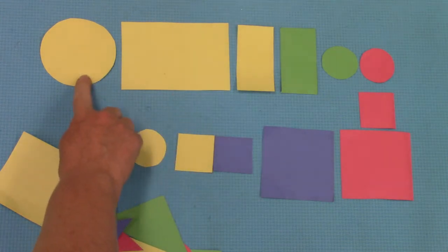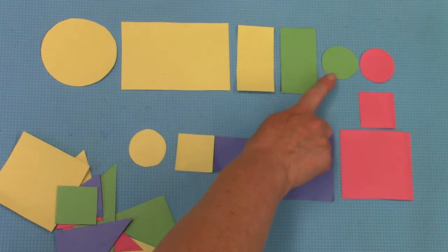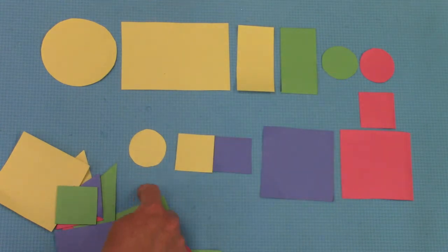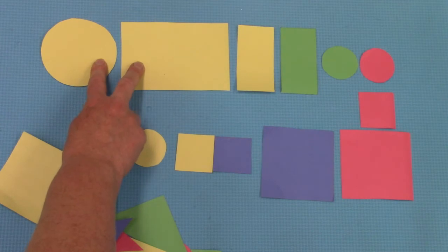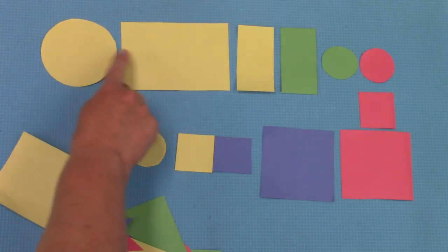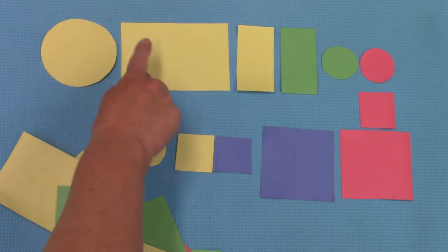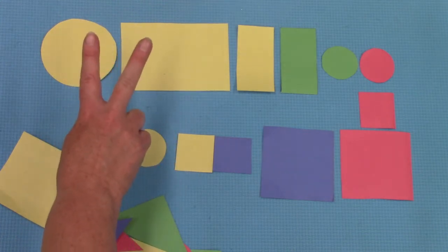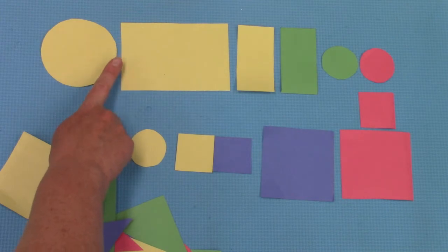Do you remember that we played the attribute train game? When we played it, we made sure that our shapes were alike in two ways. Large, large. Yellow, yellow. They're the same in two ways and they're different in one way: shape.